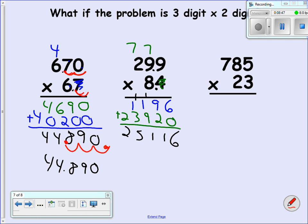How many numbers are after the decimal? 2 numbers are after the decimal. 1, 2. Decimal goes right there. So my answer would be written as 251.16.